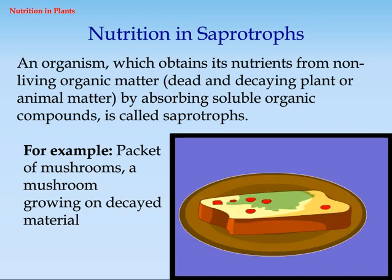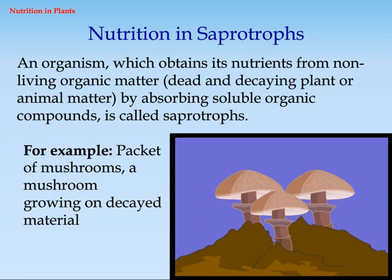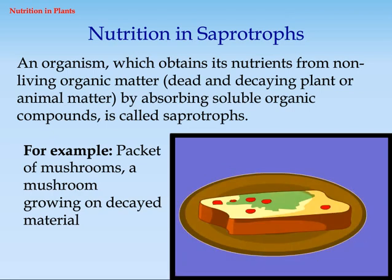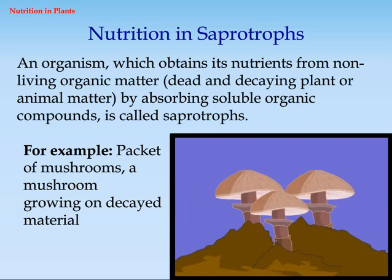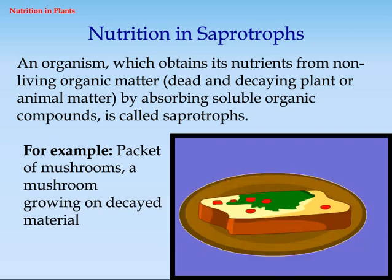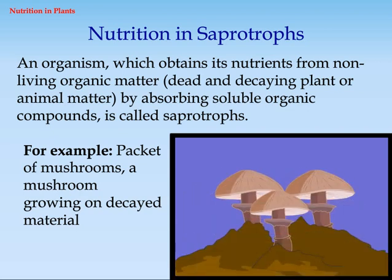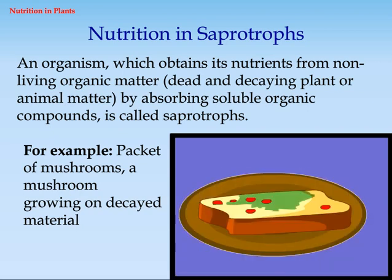Nutrition in saprotrophs. An organism which obtains its nutrients from non-living organic matter — dead and decaying plant or animal matter — by absorbing soluble organic compounds is called a saprotroph. For example, a mushroom growing on decayed material.